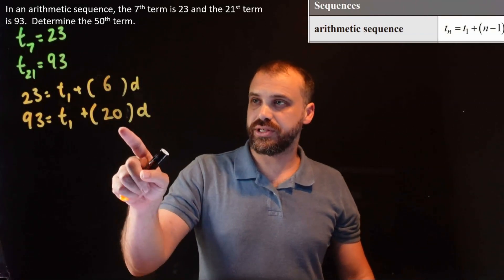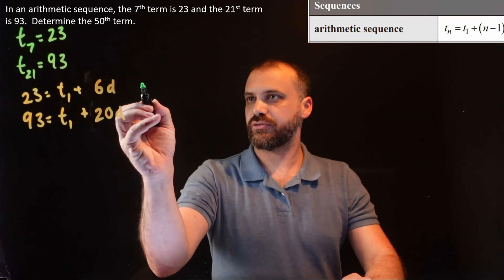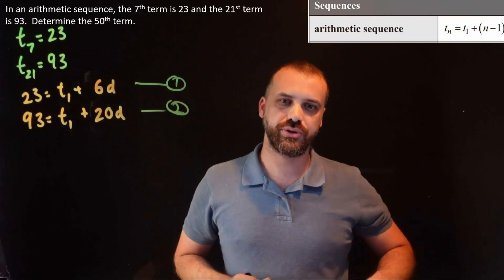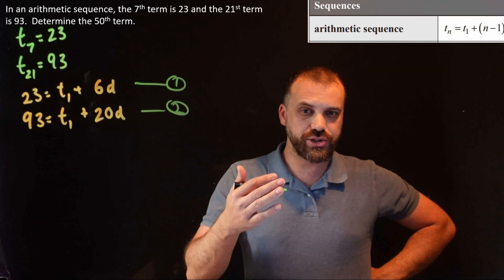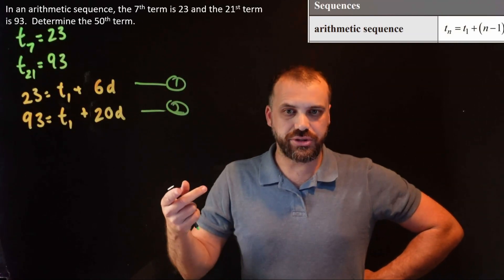Now we can even tidy this up a little bit further because we can just write this as 6d and this is 20d. So let's write that. Perfect, great. Now we can call this equation 1 and we can call this equation 2. And there's a lot of different ways that you can do simultaneous equations, but I think the easiest one here is going to be the elimination method.